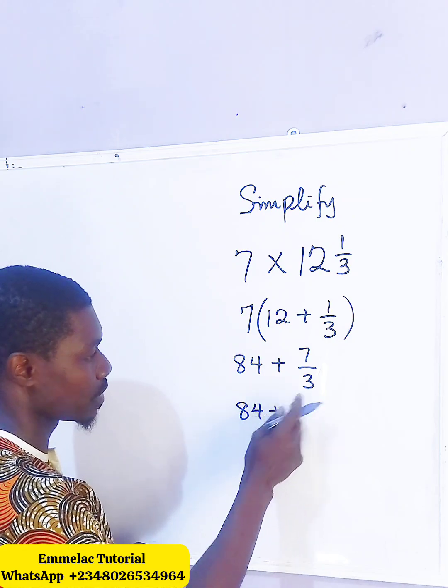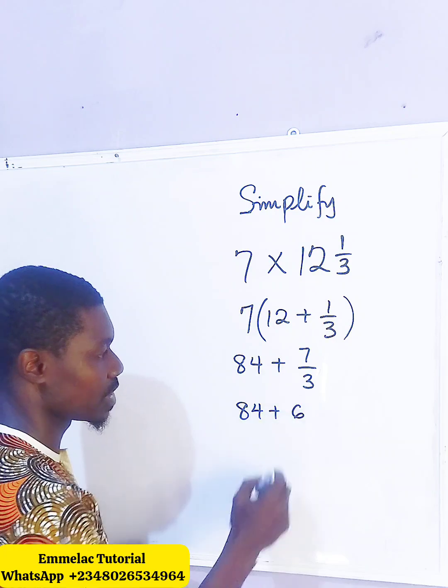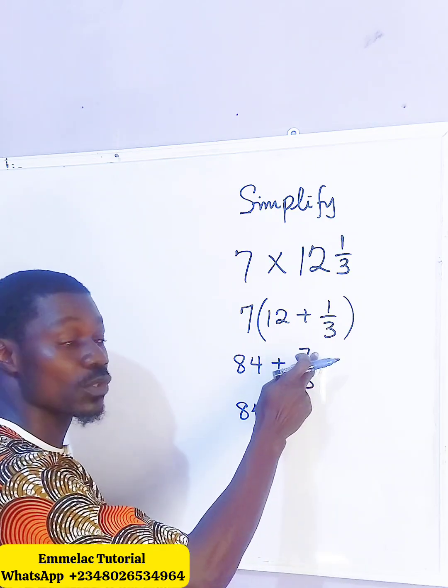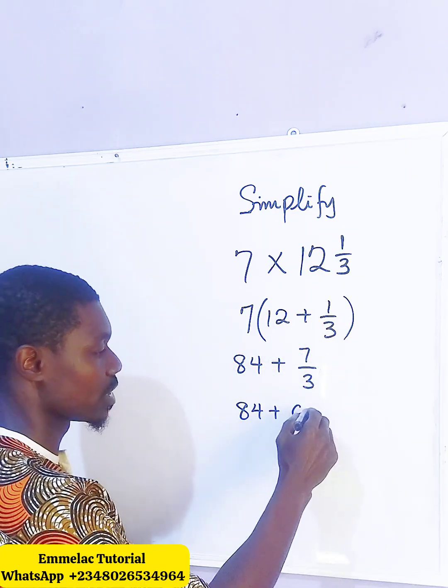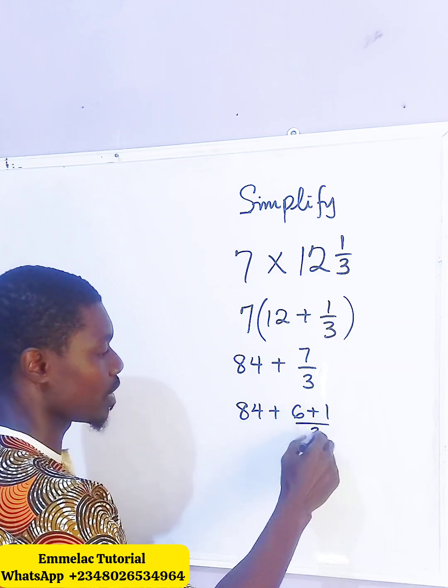So here we have 84 plus, with this fraction here we have 6, and the main number that will sum up to give us 7 will be 1, so that will be plus 1 all over 3.